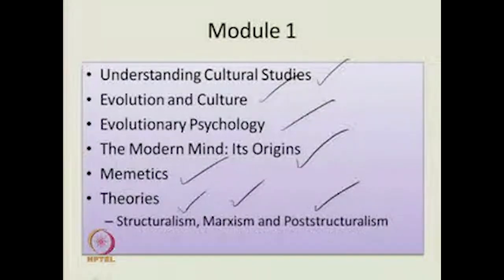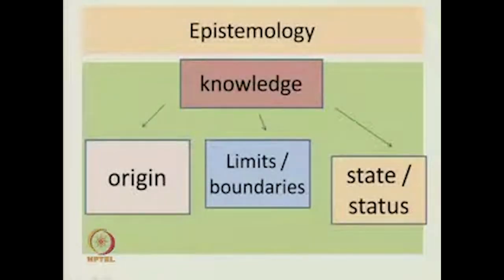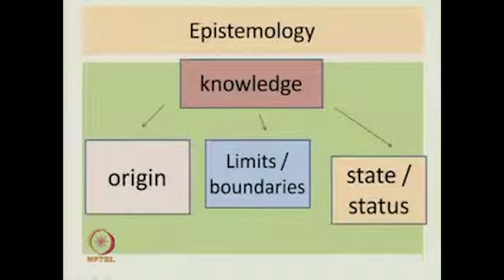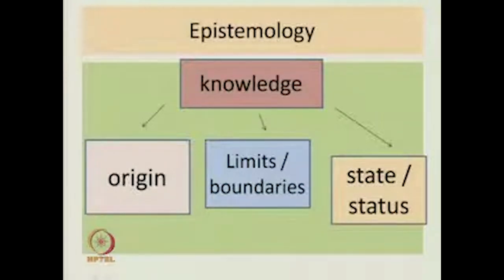We devoted ten lectures in module one. To quickly look at what we did in the last lecture on post-structuralism, we looked at this branch of philosophy called epistemology, and we said that epistemology is a theory of knowledge that looks into the origin or sources, the limits or boundaries, and the state or status of knowledge. Going back to epistemology is a key strategy in post-structuralism.